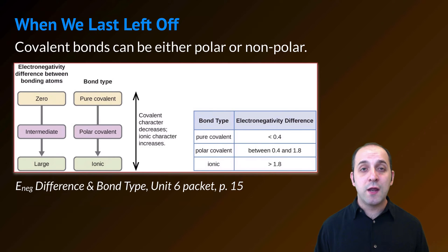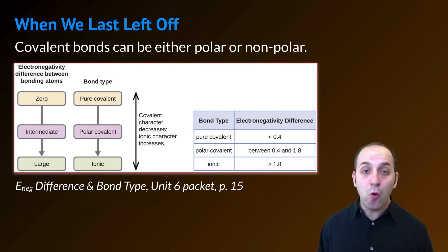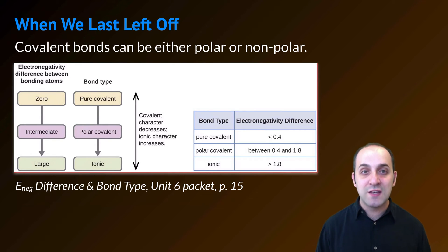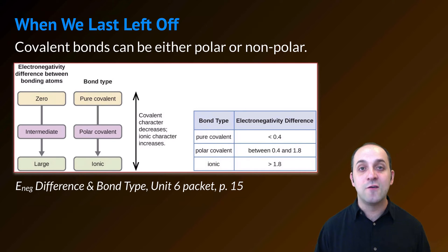We started talking about polarity in our last unit when we talked about bond polarity. As a reminder, covalent bonds can be either polar or nonpolar. You have this chart on page 15 of your unit six packet, and it always has to do with the electronegativity between the two atoms that are making the covalent bond. Specifically, if the electronegativity difference between those two atoms is less than 0.4, that bond is usually considered to be nonpolar, and if it's between 0.4 and 1.8, it's usually considered to be polar.